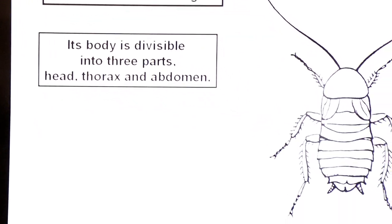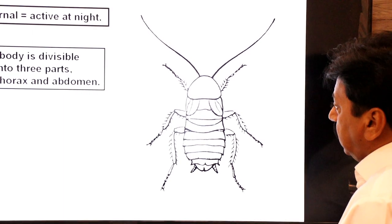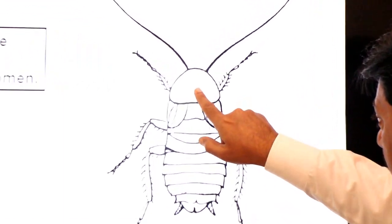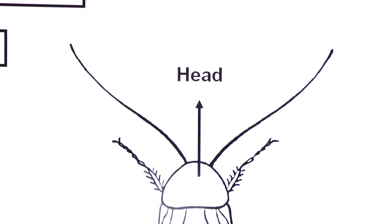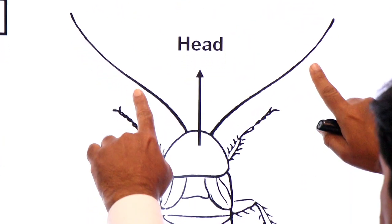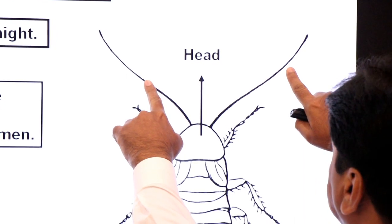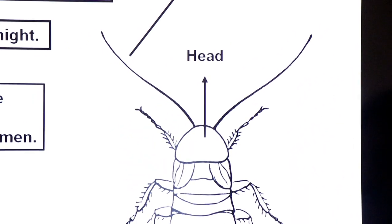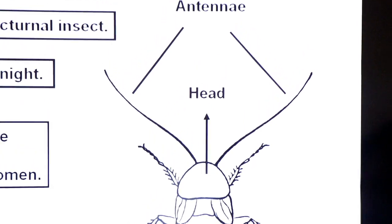Look at this diagram. This is the diagram of cockroach. This is the first part known as head. The head part contains sensory organs — antennae. They are chemoreceptors.